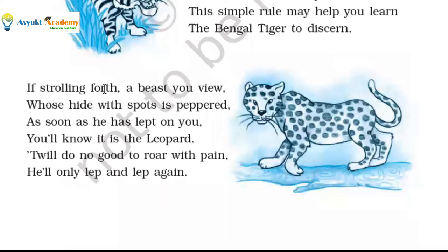The third stanza goes: 'If a strolling forth, a beast you view whose hide with spots is peppered — as soon as he has leapt on you, you will know it is the leopard. Will do no good to roar with pain, he will only leap and leap again.' This introduces another wild animal, the leopard. The poetess says very casually that while walking in the jungle, you will meet an animal with spots like pepper — black spots on its body.